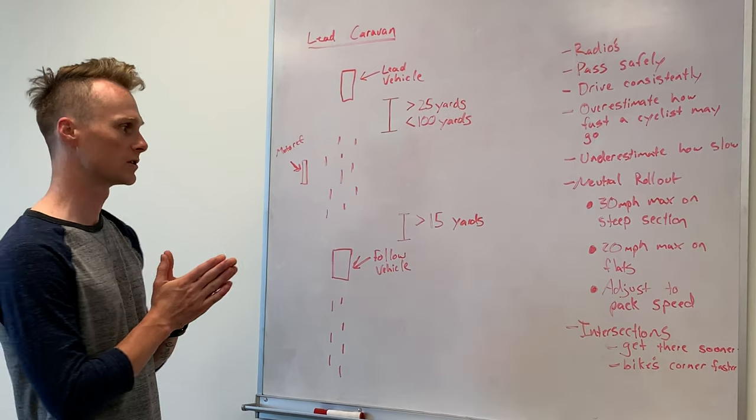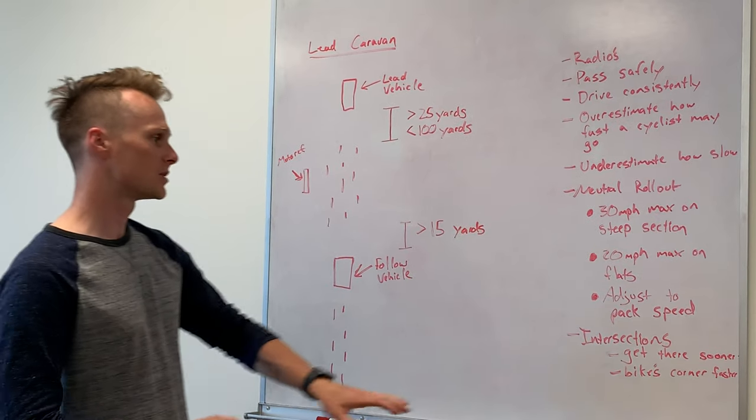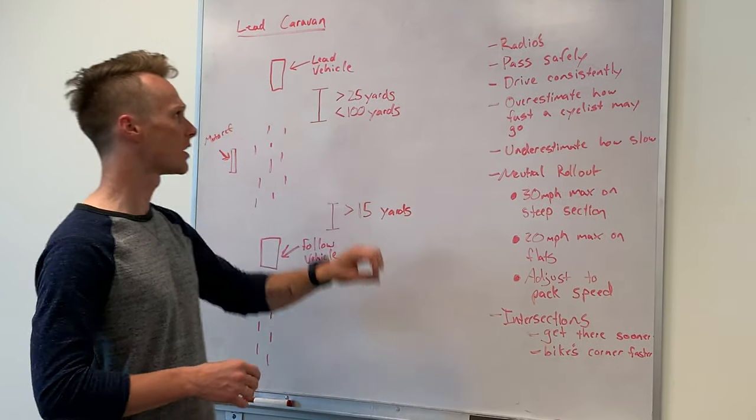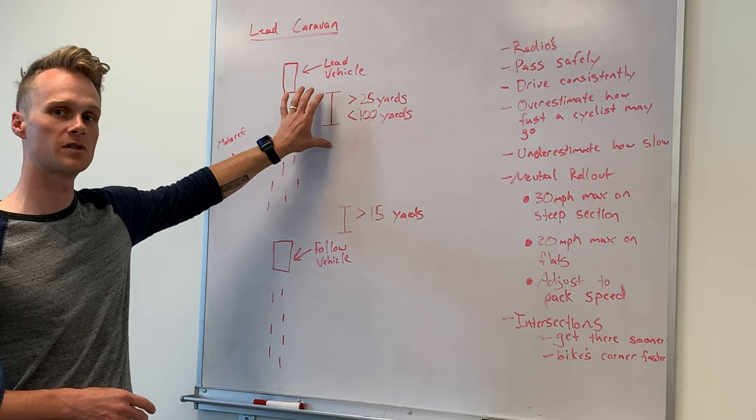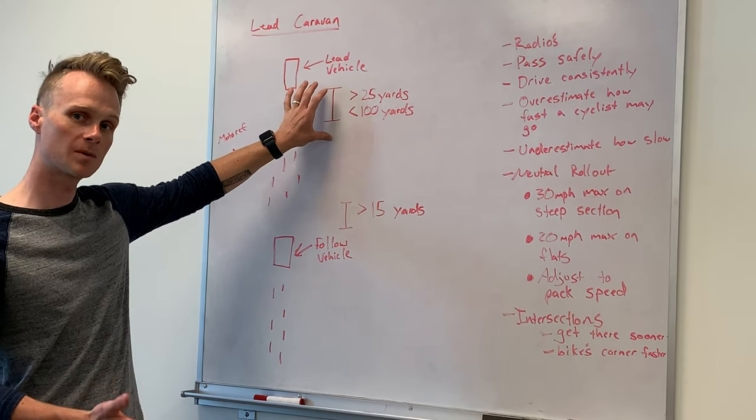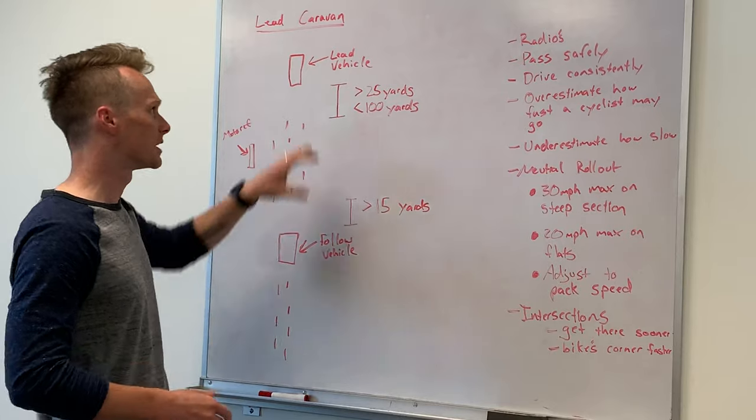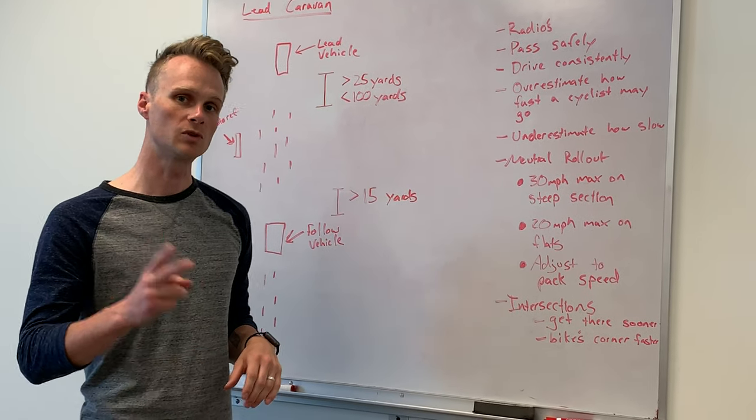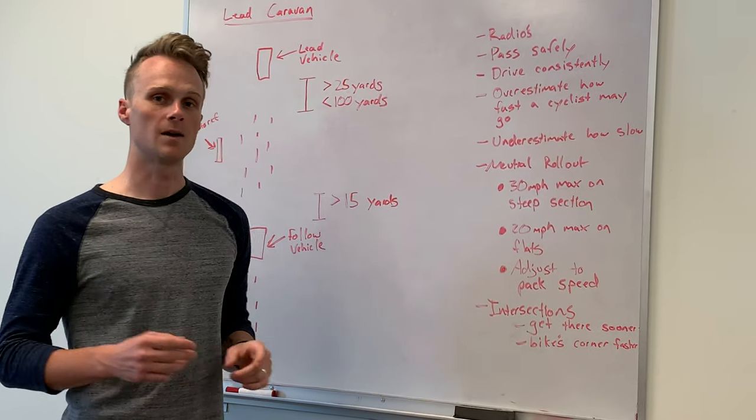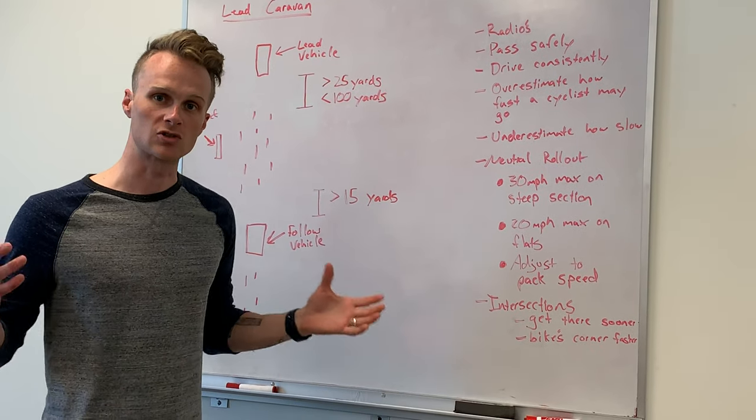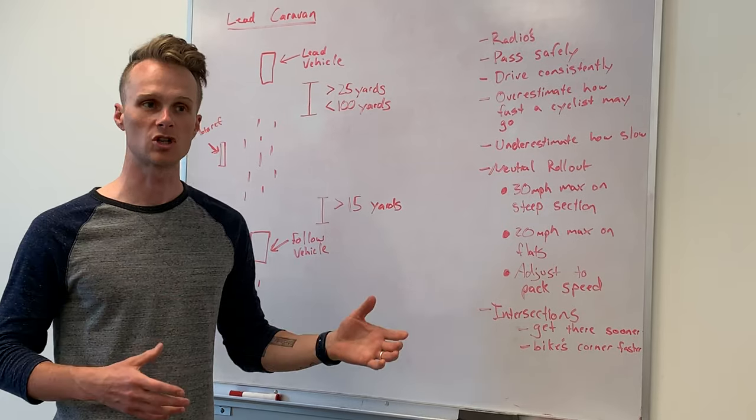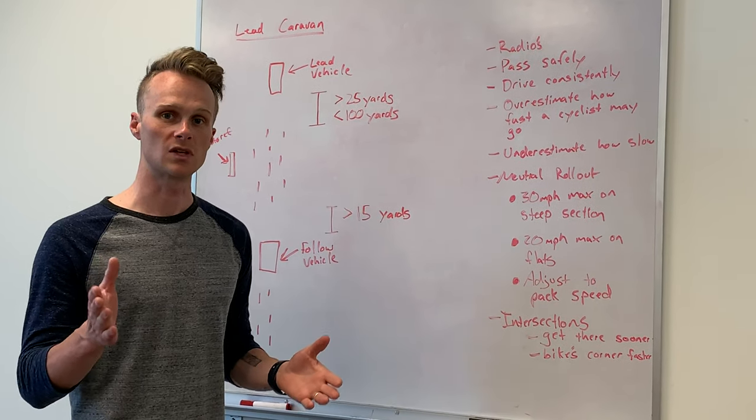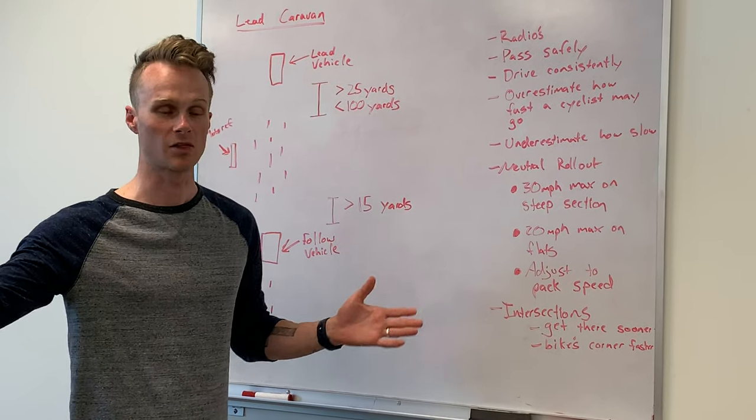A couple of things that I would say about the lead vehicle. As you're going through intersections, you should always try to get there sooner. So if you're hanging out at around 50 yards in front of the field and you know an intersection is coming up, try to speed up a little bit and increase that distance so that you can get to the intersection first. Two reasons why. First of all, it's going to allow you to clear the intersection sooner so that the marshal can get out there, get positioned, know that the field is coming, and if there's any vehicles in the way, they'll kind of get out of the way.